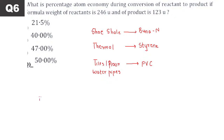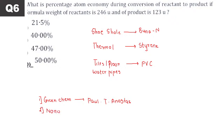Scientist names that may be asked in MCQs: Who is father of green chemistry? Paul T. Anastas. Second: Who coined the term nanochemistry? Taniguchi.